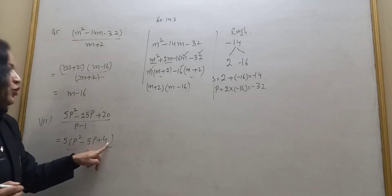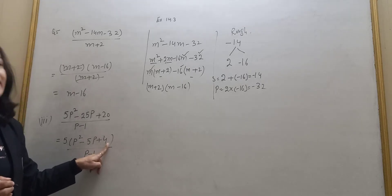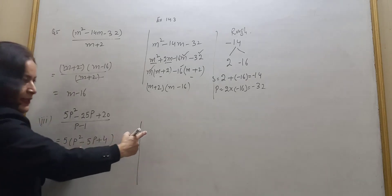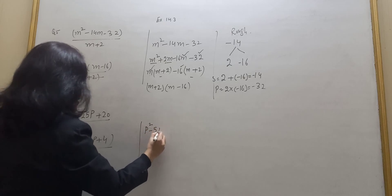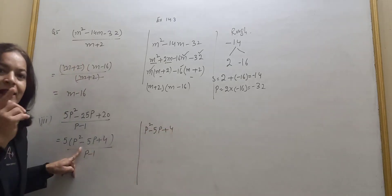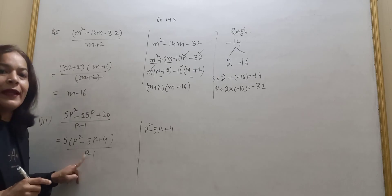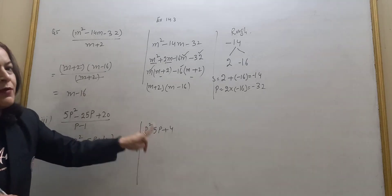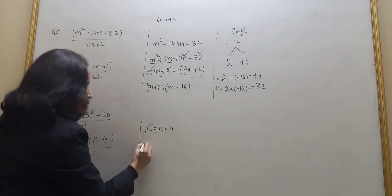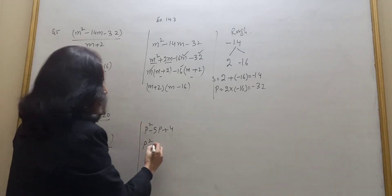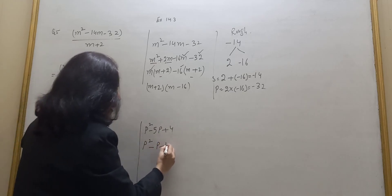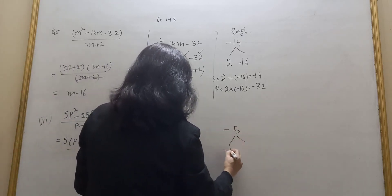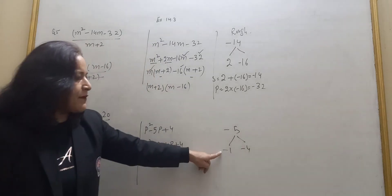Now I will factorize the numerator expression p squared minus 5p plus 4 by splitting the middle term. Solving the numerator separately: I need to break minus 5. The hint comes from the denominator — here there is a factor p minus 1, so when breaking 5, one part must give minus 1. You break minus 5 into minus 1 and minus 4.